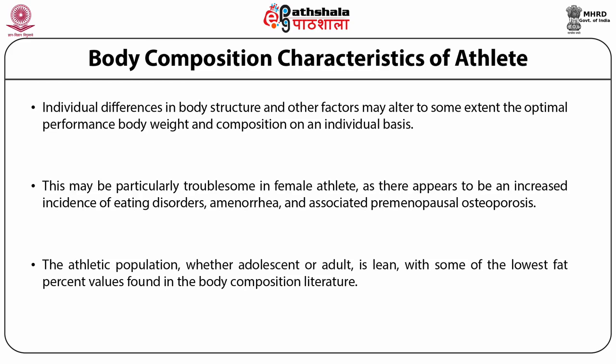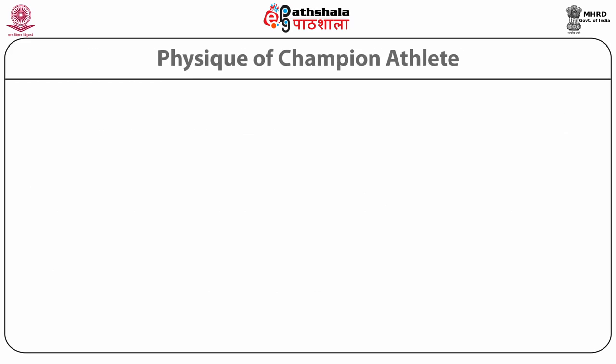In general, the athletic population, whether adolescent or adult, is lean, with some of the lowest fat percent values found in the body composition literature. Most athletic groups are lower in fat percentage compared with their non-athletic counterparts, although gender-specific differences in fat percentage are clearly evident in the athletic population too.